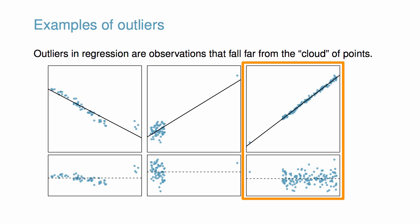Finally, in the rightmost panel, there is one outlier far from the cloud. However, it falls quite close to the least squares line and does not appear to be very influential.